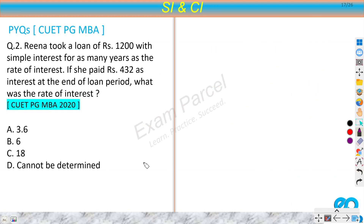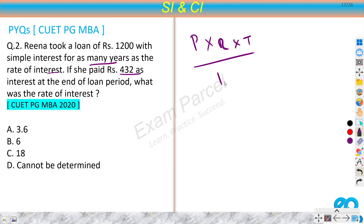Let's move on to the next question. Rina took a loan of rupees 1200 with simple interest for as many years as the rate of interest. If she paid rupees 432 as interest at the end of the loan period, what was the rate of interest? Here we can use our classic formula: SI = P × R × T / 100. I will also show you a second method using a logical approach.